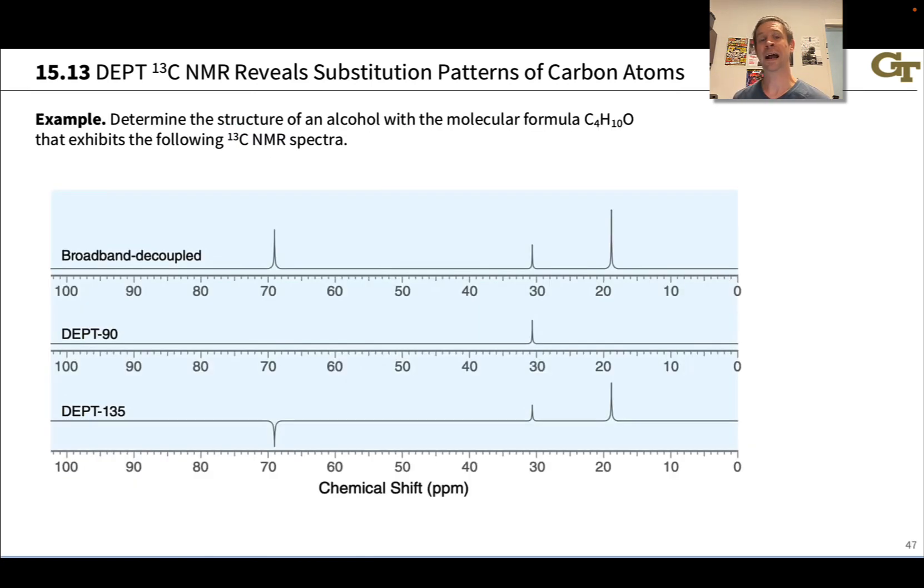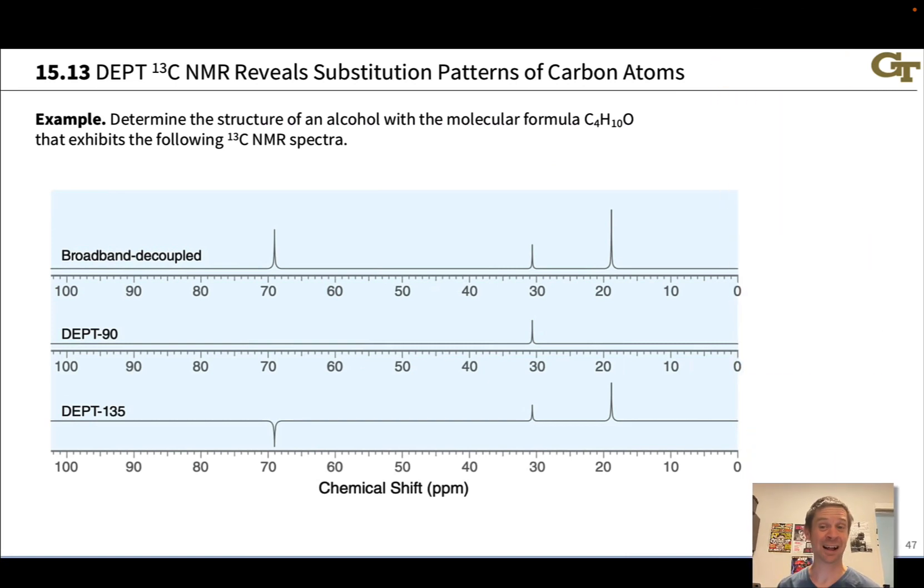Here's another example where we're asked to determine the structure of an alcohol with molecular formula C4H10O from its DEPT spectra alone. We've got the broadband decoupled, DEPT-90, and DEPT-135 spectrum. Before we get into that, let's calculate the HDI. The HDI is equal to zero. C4H10 is saturated butane, and so this C4H10O still has an HDI of zero.